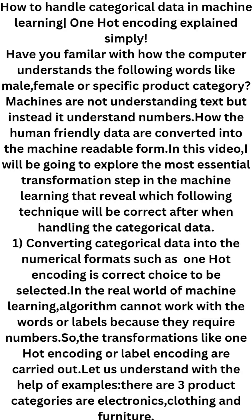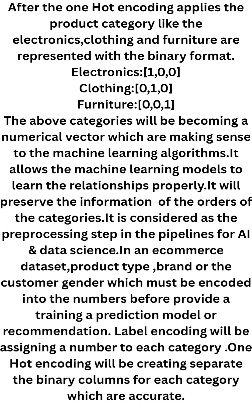Let us understand with the help of an example. There are three product categories: electronics, clothing, and furniture. After one hot encoding is applied, each category is represented in binary format — Electronics: 100, Clothing: 010, Furniture: 001. These categories become numerical vectors which make sense to machine learning algorithms.